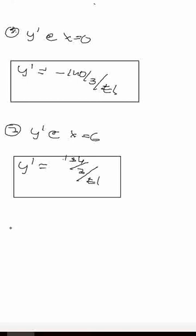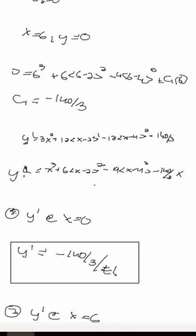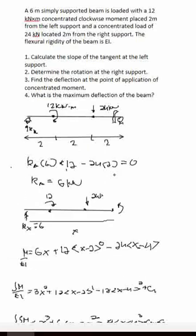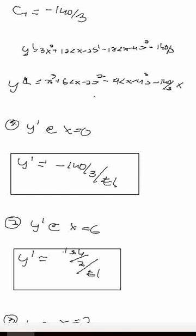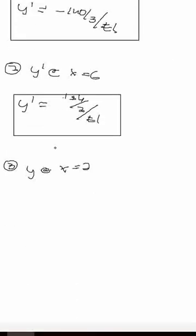For question 3, find the deflection at the point of application of the concentrated moment, which is at X equals 2. Substituting X equals 2 into the deflection formula, the terms (X minus 2) and (X minus 4) are neglected. The remaining values give Y equals 2 cubed minus 140 over 3 times 2, which equals negative 85.33 over EI.